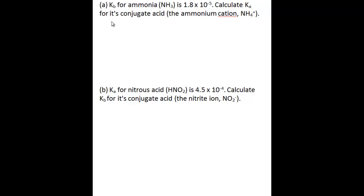The first part of this problem tells you that the Kb value for ammonia is 1.8 times 10 to the negative 5. You're asked to calculate the Ka for the conjugate acid of ammonia, which is the ammonium cation NH4+. The Kb value given represents the balanced chemical equation where the ammonia base accepts a proton from water. So that equation is NH3 plus water gives you NH4+.